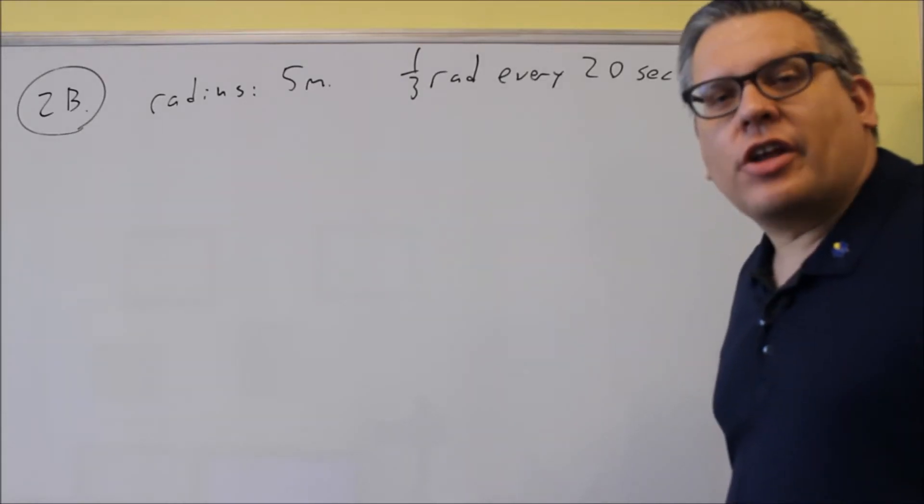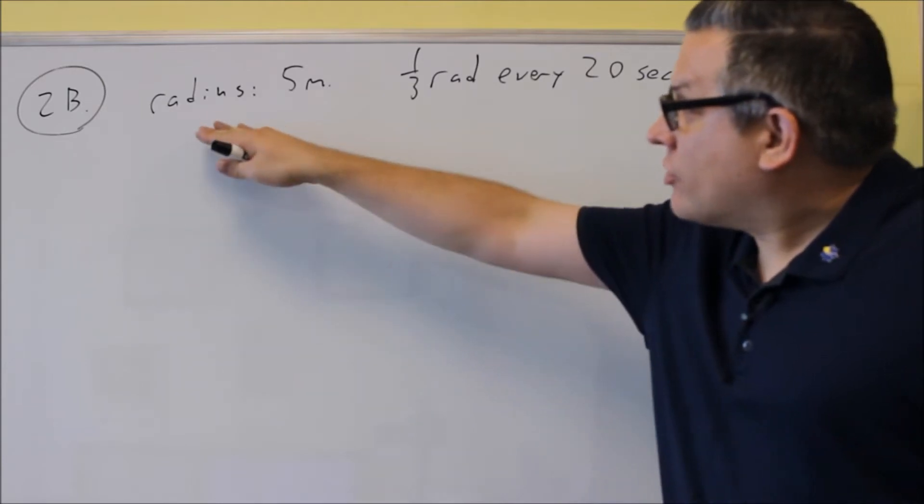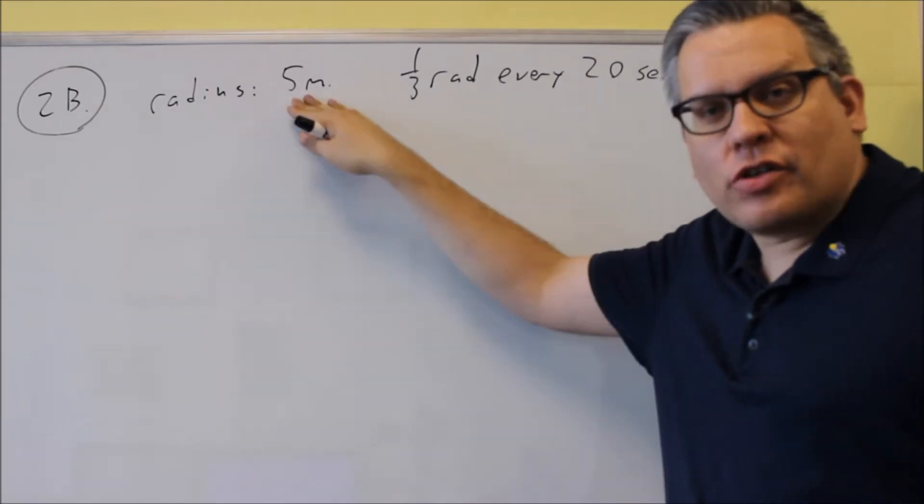For 2b, they also want us to find the angular speed and linear speed. This is the information they give us, the radius. I'm going around a circle of radius 5 meters.